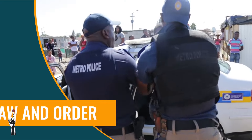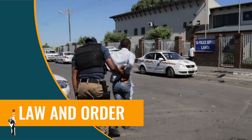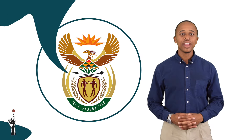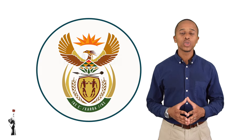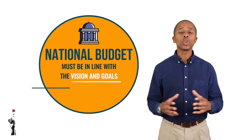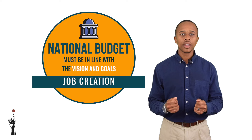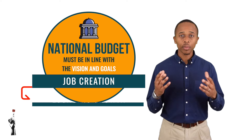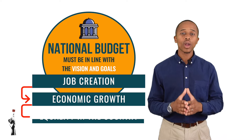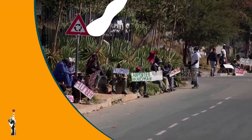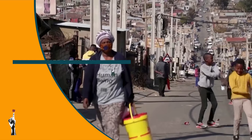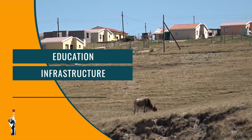The government is responsible for ensuring that the national budget is in line with its vision and goals to ensure job creation. This ensures economic growth and equality in the country. With this goal in mind, government spending will be mainly focused on education, infrastructure, and housing.